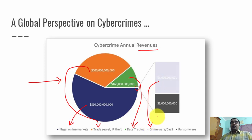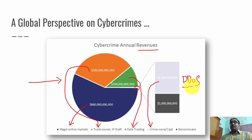Part of the infographic is divided into crime as a service — where people provide hacking techniques or methods as services. For example, one such service is DDoS (Distributed Denial of Service). You can find these services on the internet: if you simply want to take down a server, you purchase this DDoS service, enter the target URL or IP address, hit submit, and the service performs a DDoS on the target. The remaining portion represents revenues from ransomware.